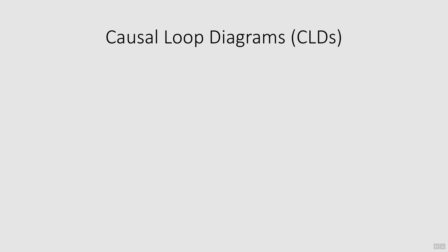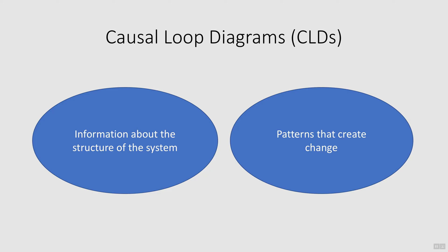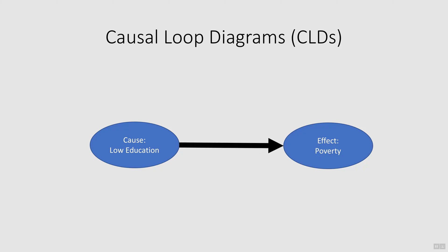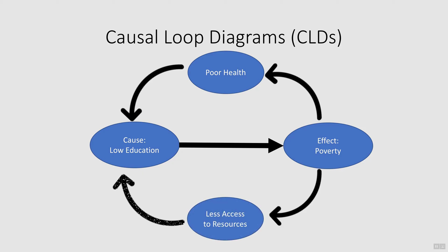Causal loop diagrams give us information about the structure of the system and the patterns that create change. They look at cause and effect relationships, such as the one between lack of education and poverty. However, unlike most traditional modeling tools that assume the relationship is linear, causal loop diagrams allow us to account for the feedback that occurs, which can amplify conditions in the system and create unexpected change. For example, poverty causes poor health, which in turn has a negative effect on a person's ability to be educated.